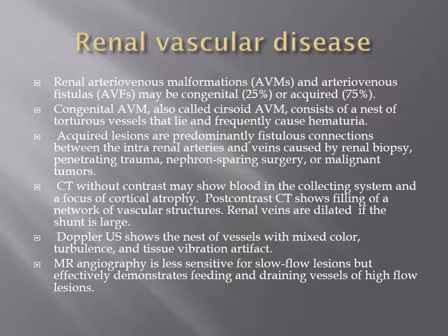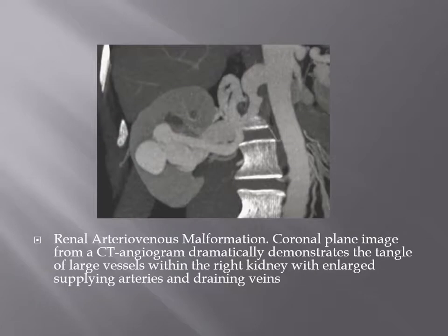Renal vascular disease includes arteriovenous malformation (AVM) and arteriovenous fistula (AVF). Congenital AVM is less common than acquired AVF, which is most often iatrogenic. Doppler ultrasound shows a nest of vessels with mixed-color turbulent flow. MRI angiography is sensitive for slow-flow lesions and effectively demonstrates feeding vessels of high-flow lesions. A case shows a renal AVM on coronal CT angiography with large vessels within the right kidney and an enlarged supplying artery and vein.